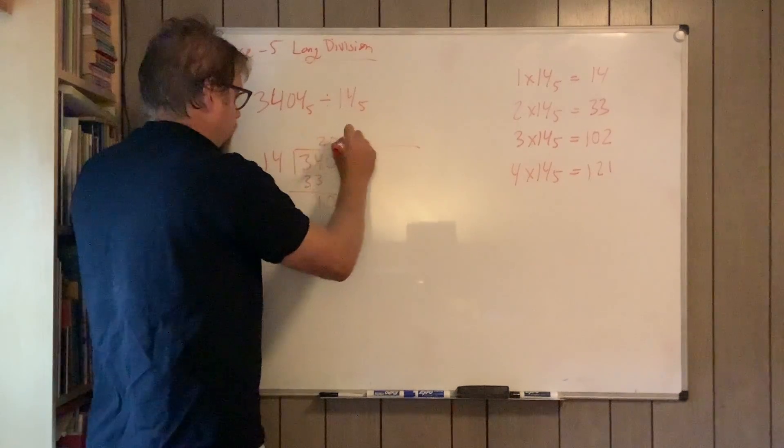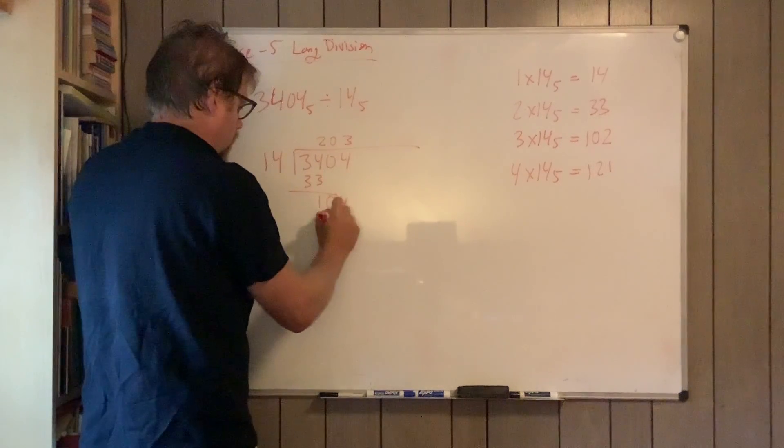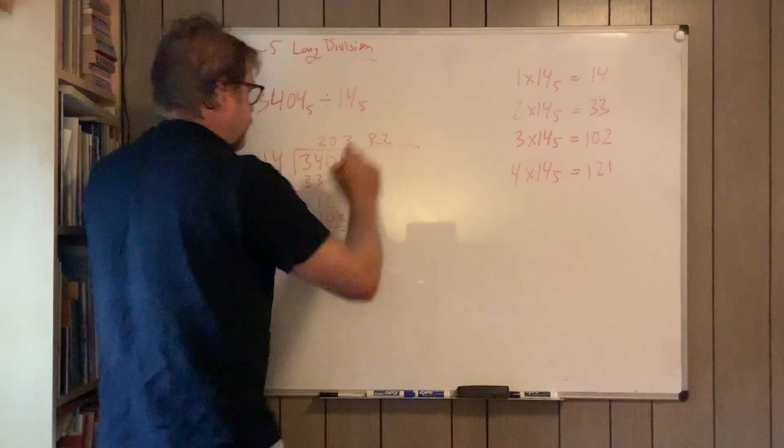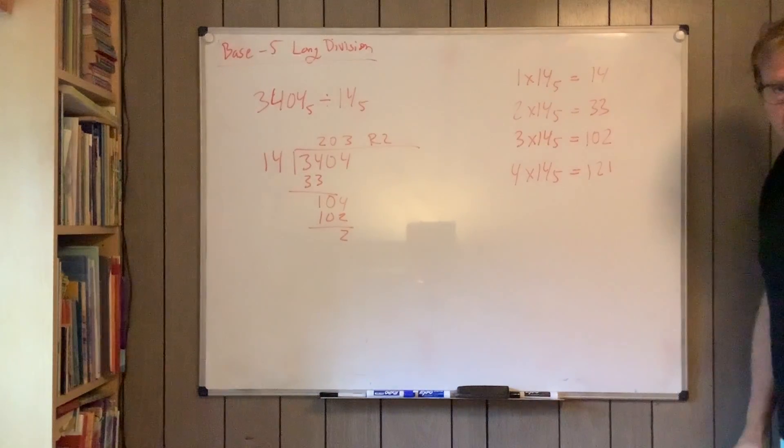And then this has to be 3, so 3102 with remainder 2.